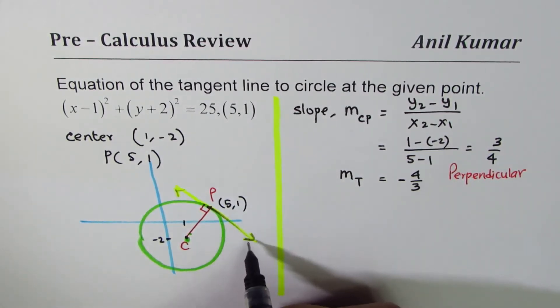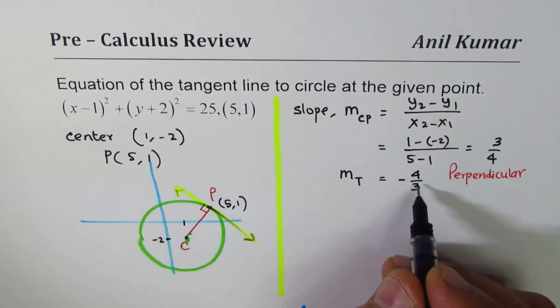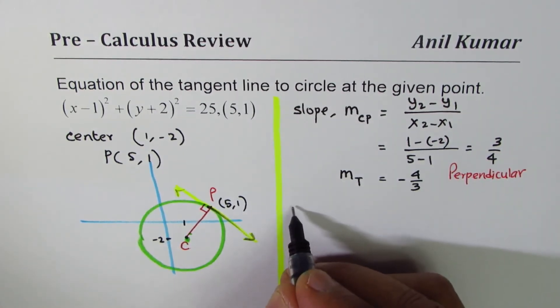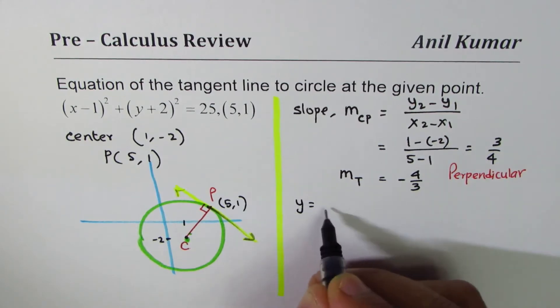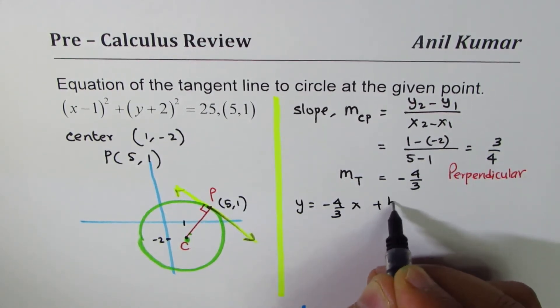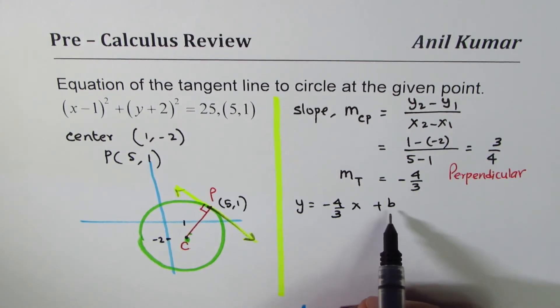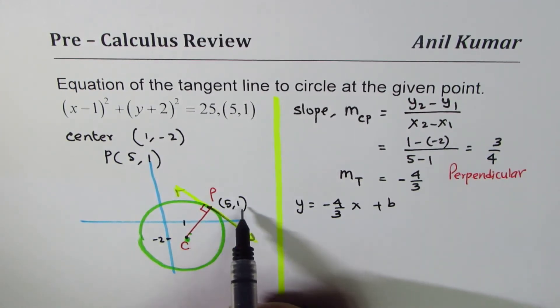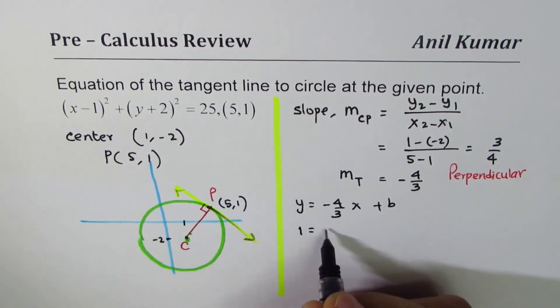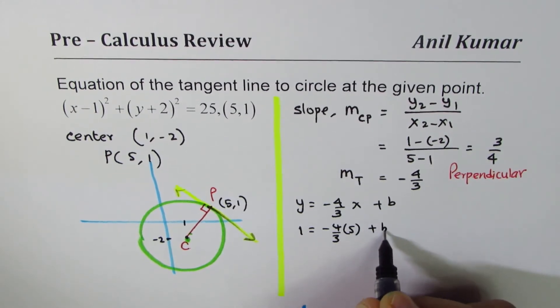Now if the slope of the line is minus 4 over 3, then the equation could be y equals minus 4 over 3x plus b. To find the value of b, we can use the point (5, 1). x value is 5, y is 1. So we get 1 equals minus 4 over 3 times 5 plus b.